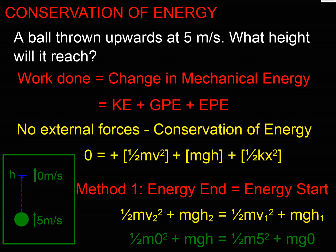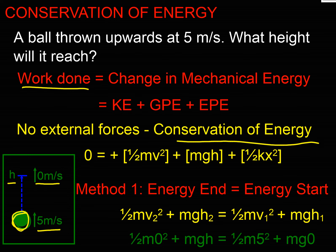Let me give you an example. I've got a projectile problem: I've got a ball and I throw it up at 5 meters per second, and I want to work out how high it's going to go. At maximum height, the vertical velocity is going to be zero. We've done a lot of this using SUVAT but we can also do it using energy. There are no external forces here — only gravity — so we're working with conservation of energy, and there's no elastic term, so I cross out those two terms and I'm just left with kinetic and gravitational potential energy.